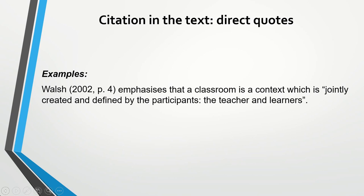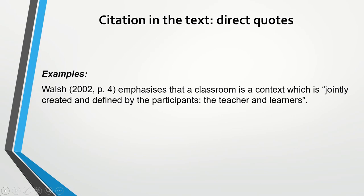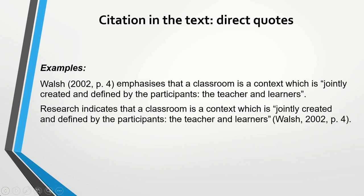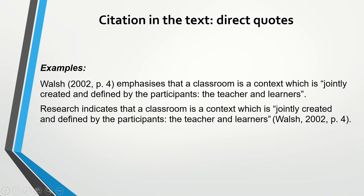Let's have a look at the example. I have a direct quote: 'jointly created and defined by the participants, the teacher, and learners.' The direct quote is included in quotation marks, and I have the author's name, year of publication, and page number. In the second example, I have the same quote in quotation marks, then the author's name Walsh, year of publication 2002, and page number — page 4. We provide a page number to help the reader find the quote in the source.